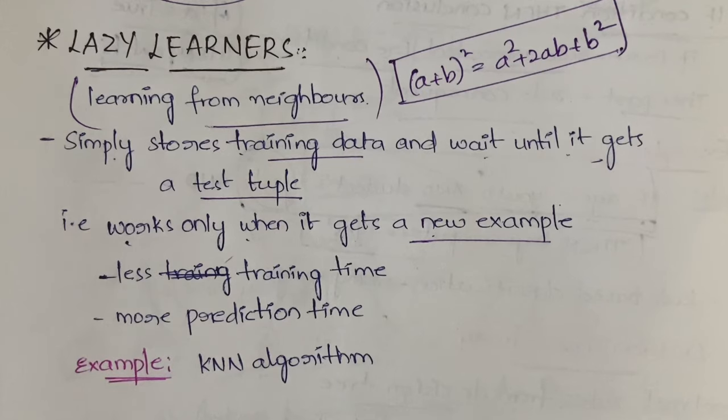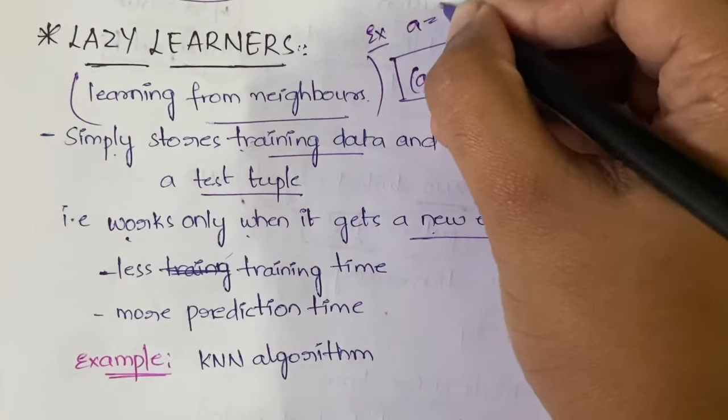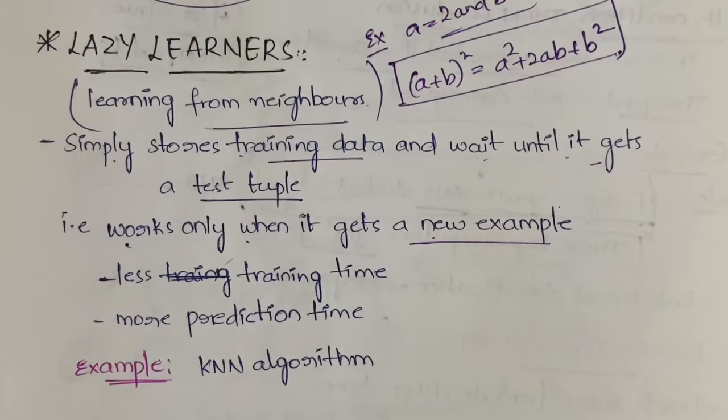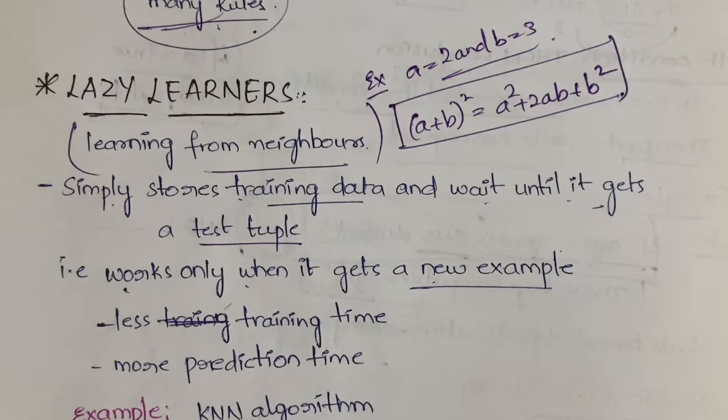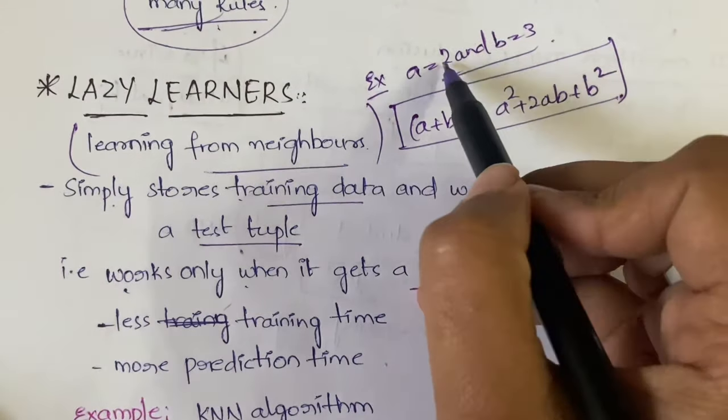When you give the values for a and b, suppose your example has a = 2 and b = 3. This is what you want to check. Then what the machine will do is analyze: okay, in place of a I have to substitute 2, in place of b I have to substitute 3.